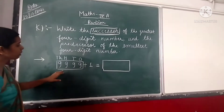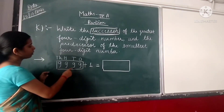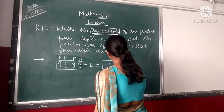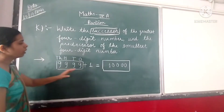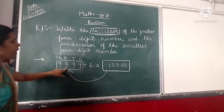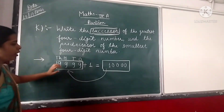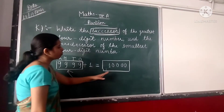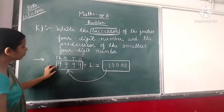For the previous number, the greatest 4-digit number is 9999. When we add 1 in 9999, we get 10000. So we can say that 10000 is the successor of 9999. When we add 1 in our given number, we get another number, and that number is known as the successor of the given number.